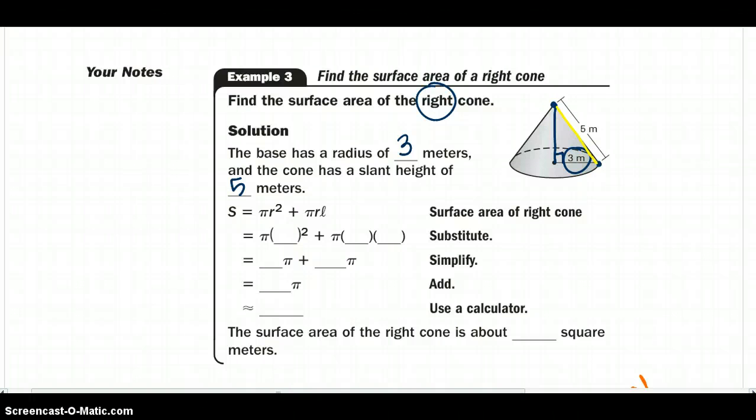So let's just plug it into our equation: pi r, which is 3 squared, plus pi times our radius, 3, times our slant height, which is 5. So 9 pi plus 15 pi gives us 24 pi, which is approximately 75.4 square meters.